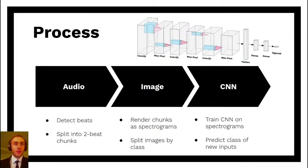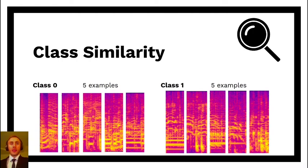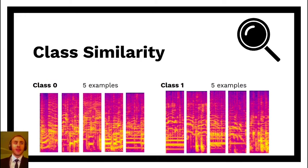Because each song is a different tempo, and therefore each two-beat chunk is a different number of milliseconds long, I thought a good approach would be to render a spectrogram of each chunk with the same pixel dimensions and use a convolutional neural network to classify those images. Once I prepared all my data, it became pretty clear that this was not an easy problem. I've included five randomly chosen examples from each class here, and you can probably agree that, at least visually, it looks like there's quite a bit more variance within the classes than there is between the classes.